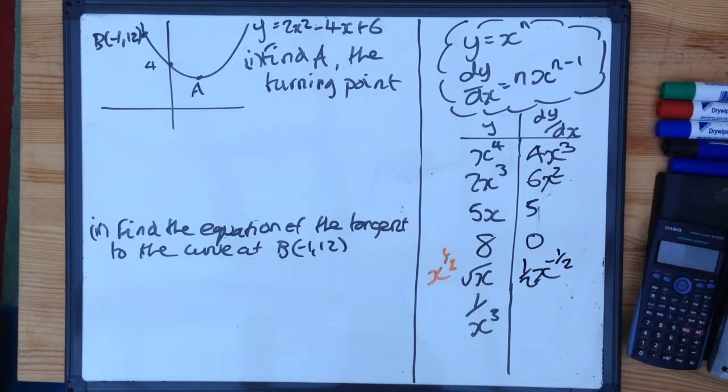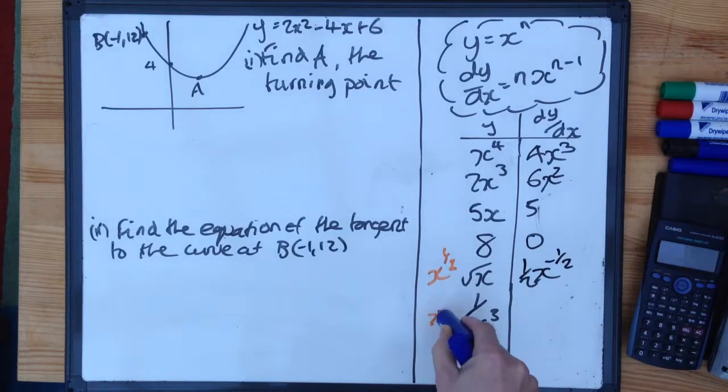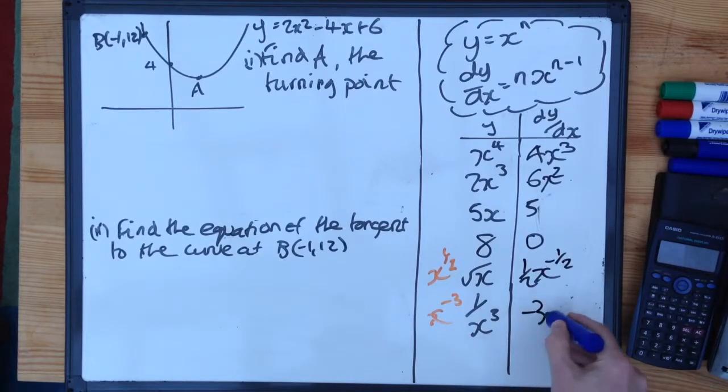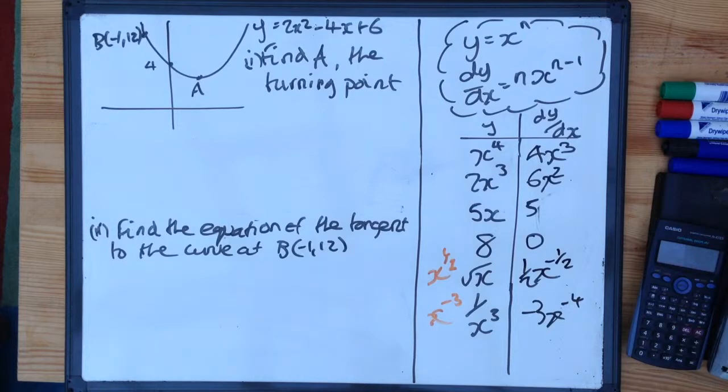Similar idea for 1 over x cubed. We need to rewrite that as x to the power of something. In this case, because it's 1 over, it's to the minus 3. So multiply by the power, so minus 3x, take 1 off the power, minus 4. So that's how you differentiate all those things, and there's always a couple of marks just for doing that.